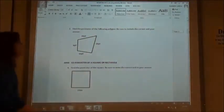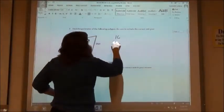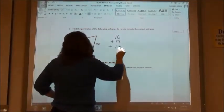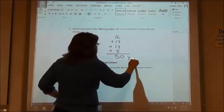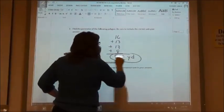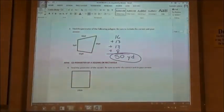50. So you took 16 plus 13 plus 13 plus 8, and you got 50, and your units are yards. So 50 yards would be the perimeter of that polygon.